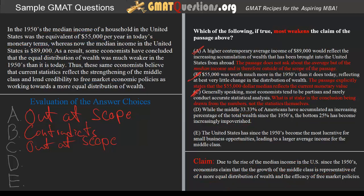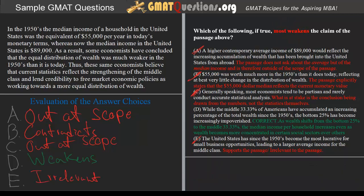Answer choice E: the United States has since the 1950s become the most lucrative for small business opportunities, leading to a larger average income for the middle class. E accounts for the rise in median income from $55,000 to $89,000 by attributing it to more small business opportunities, which strengthened the middle class. This addresses some information in the passage but not what we're specifically looking to weaken — namely the correlation between a stronger middle class and a more equal distribution of wealth. At best, E supports information in the passage but is largely irrelevant to the claim we're weakening. This leaves D as the only correct answer choice, the one that most efficiently weakens the passage.